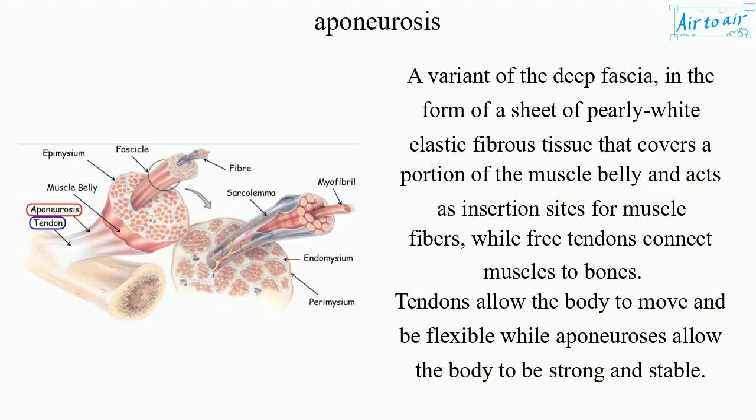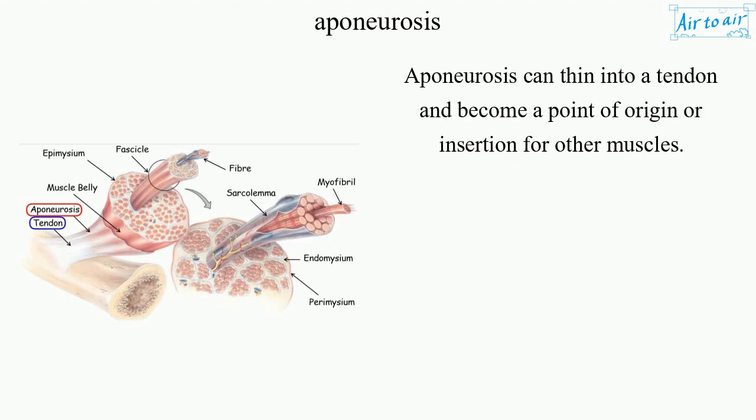Tendons connect muscles to bones. Tendons allow the body to move and be flexible, while aponeurosis allow the body to be strong and stable. Aponeurosis can thin into a tendon and become a point of origin or insertion for other muscles.